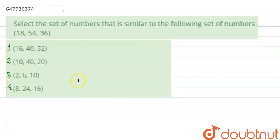Hello students, let us have a look at the question first of all. Select the set of numbers that are similar to the following set of numbers. We are asking that we have 4 options where we have different set of numbers. Let us know which set of numbers is completely similar to our given set of numbers.